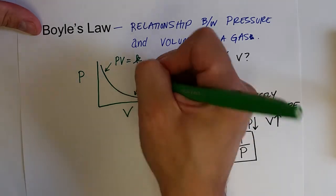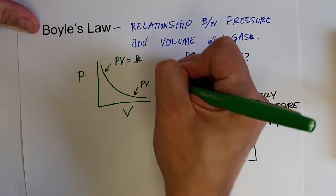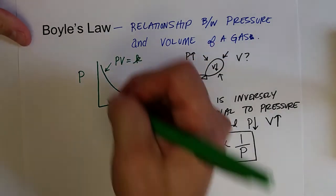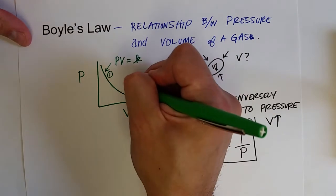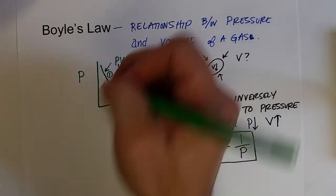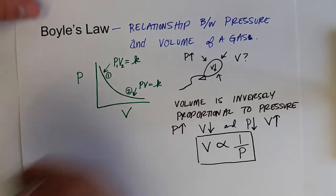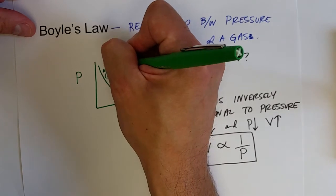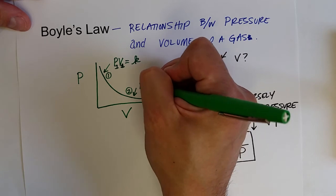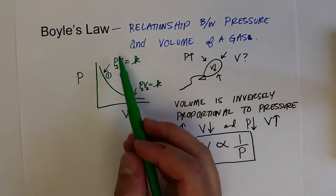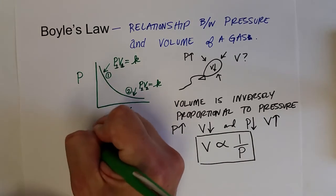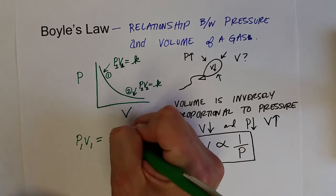We can do a second experiment where we also multiply the pressure times the volume. That would equal the same proportionality constant. If these were two different experiments, say 1 and 2, we could label the pressure in our first experiment as P1, the volume in our first experiment as V1. The pressure in our second experiment is P2, the volume in our second experiment is V2. Since both of these functions are equal to the same constant, we get an expression that says P1V1 equals P2V2.